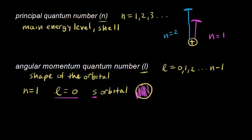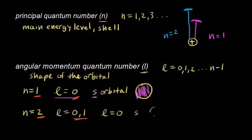For the second shell, n equals two, the allowed values for L are zero and one — two possible values, which equals n. We've already discussed that L equals zero means an s orbital shaped like a sphere. Now in the second main energy level we also have L equals one, which corresponds to a p orbital.